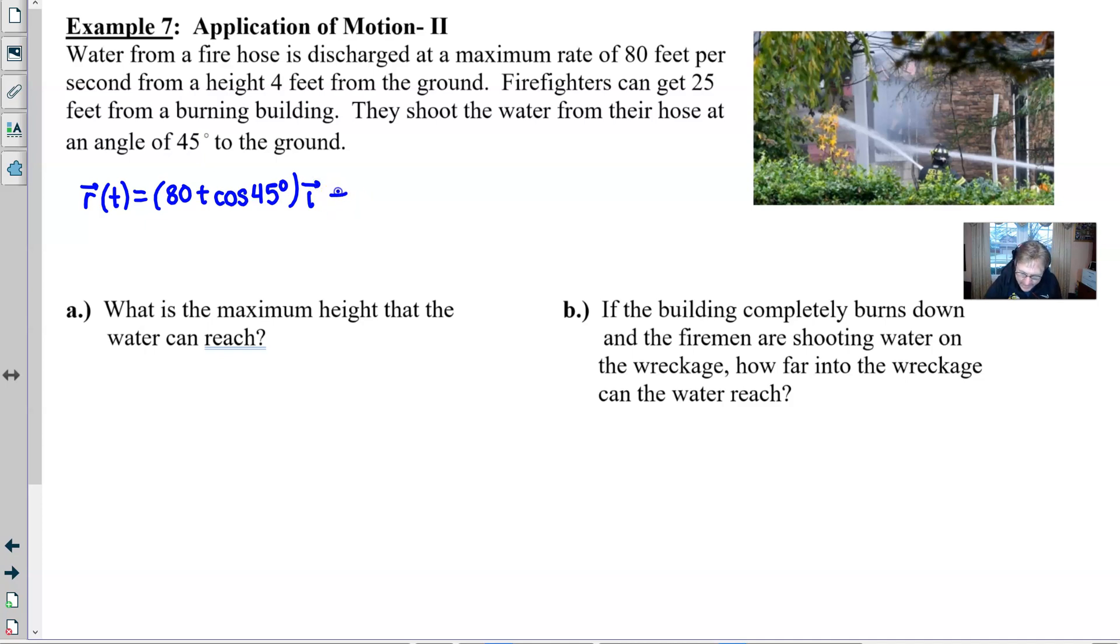Now for the y, we have a little bit more to work with. We have to put our negative 16t squared. We are in feet here. And now we move to our V0T, which would look very similar to our x component vector, except having the sine of 45 degrees. And then we're thinking that these firemen will probably be handling this hose under their shoulder, under their arm, four feet from the ground. And that would give us our complete y of t.